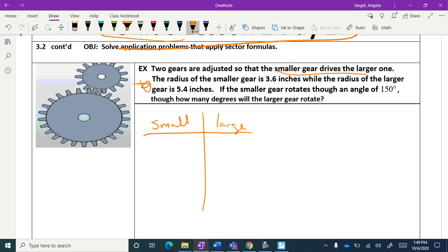What does it give us? It gives us the radius of the small one and the radius of the larger gear, and it also gives us a degree measurement and wants to know how many degrees the larger gear will rotate.